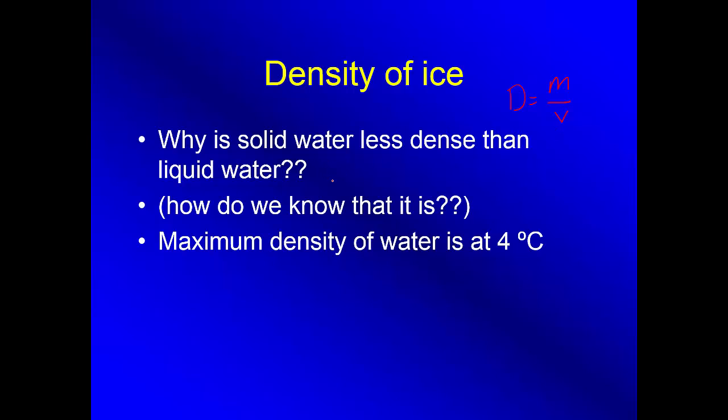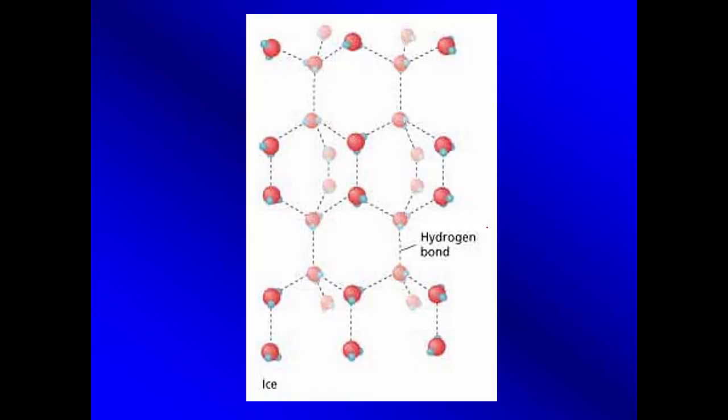Solid water is less dense than liquid water. How do we know this? Ice floats. That's our proof. And in fact, we know that the maximum density of water actually occurs at 4 degrees Celsius. That happens because when water freezes, this hydrogen bond right there, remember that's the strongest intermolecular force, it's an intermolecular force.